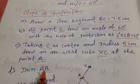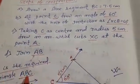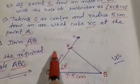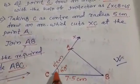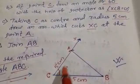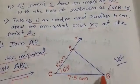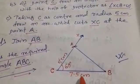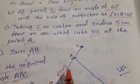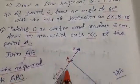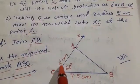Now join AB. It is the required triangle ABC. Here we find AC equal to 5 cm, CB or BC is equal to 7.5 cm, hence triangle ABC is constructed.